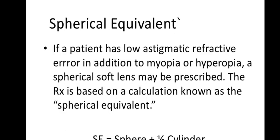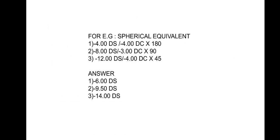If a patient has low astigmatic refractive error in addition to myopia or hyperopia, a spherical soft lens may be prescribed. The prescription is based on a calculation known as the spherical equivalent. The formula is: Spherical Equivalent = Sphere + (½ × Cylinder).